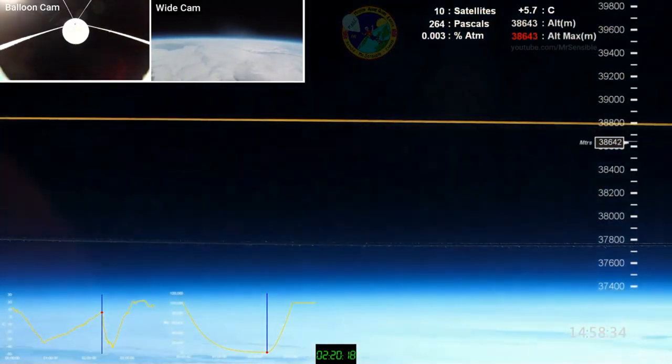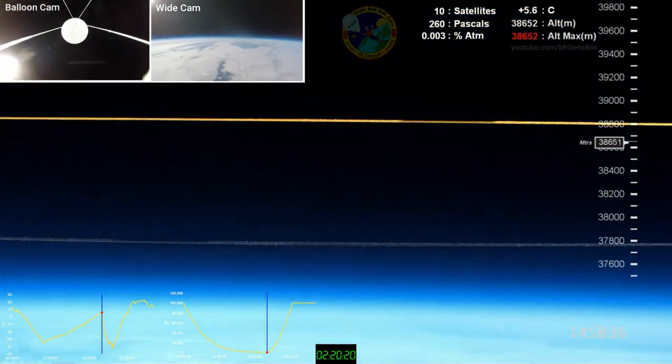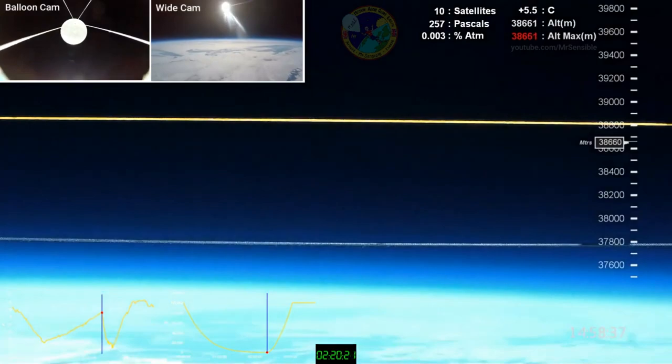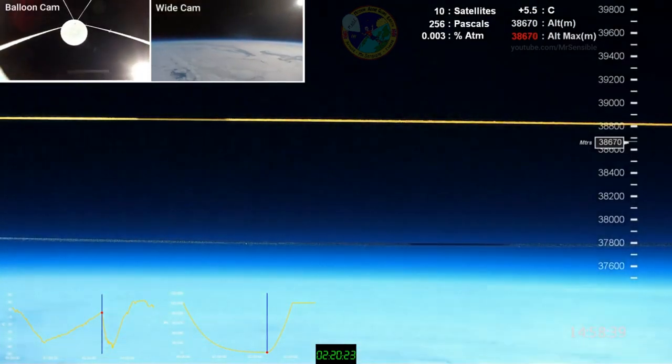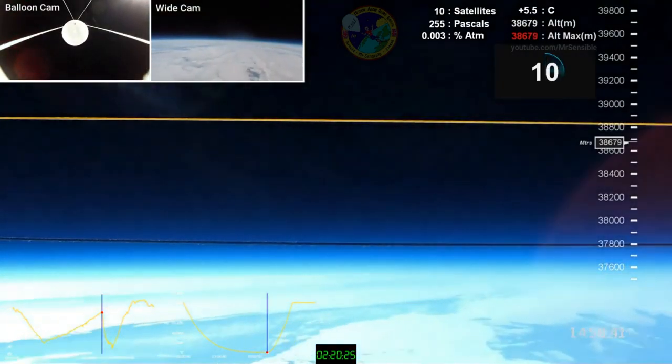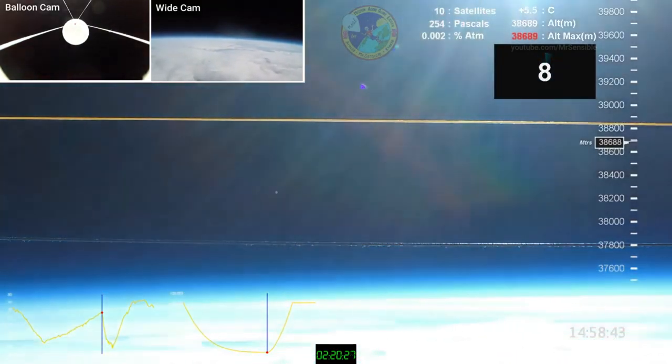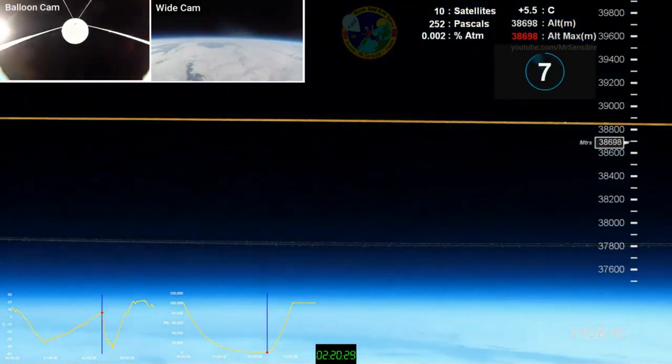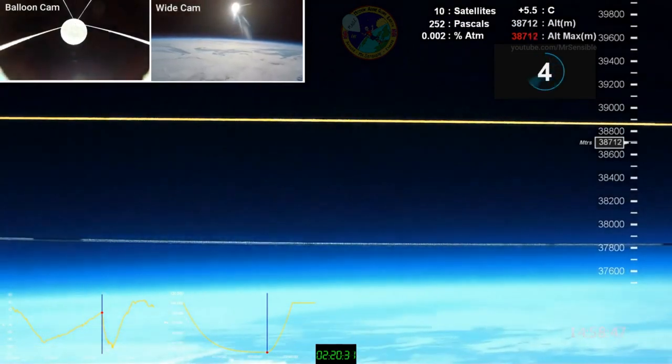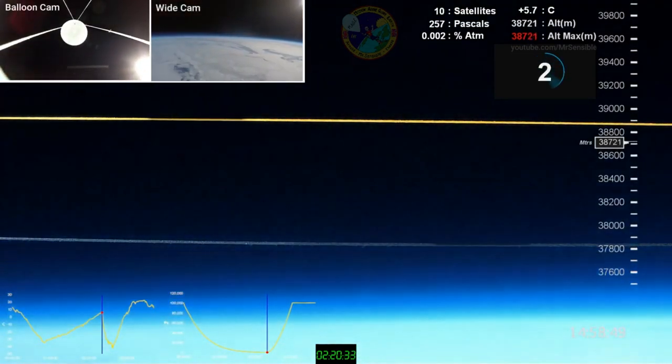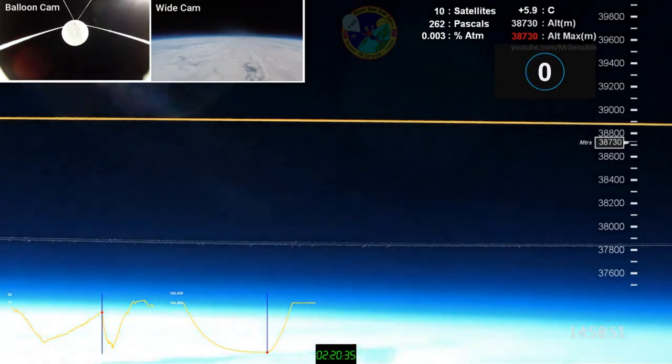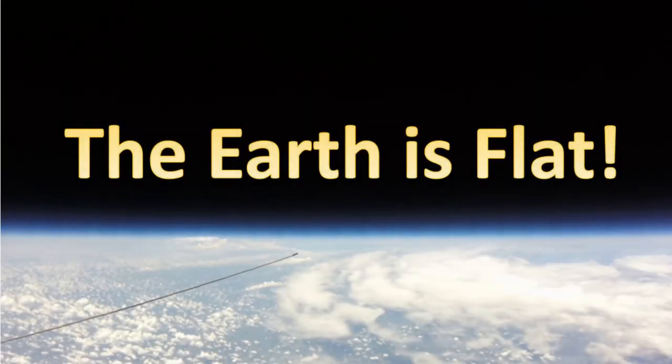I'm sorry our globe faithful but Mr. Sensible not only proved that the Earth is stationary that there is indeed no Coriolis effect but Mr. Sensible also proved that there is absolutely no measurable curvature at a whopping altitude of 126,988 feet. The Earth is flat.